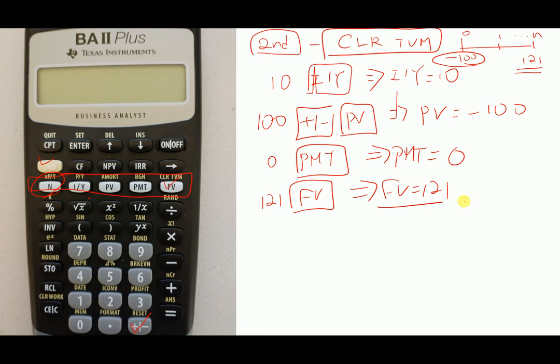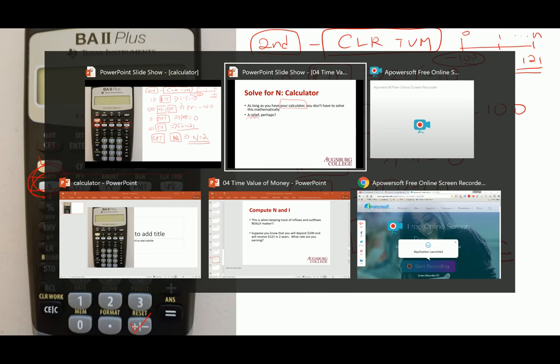If you compute now N, you should have N equals 2. So we got the answer. It's not a very difficult problem. If you use the financial calculator, you don't have to worry about that.